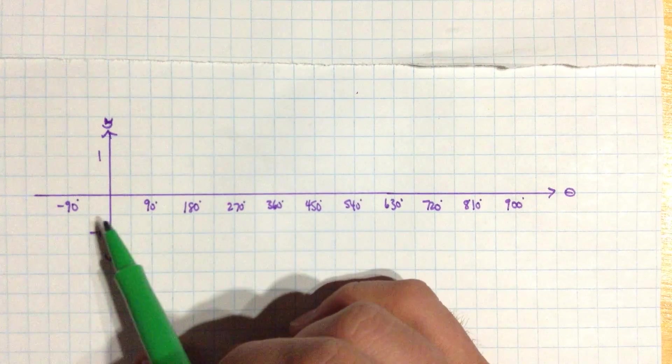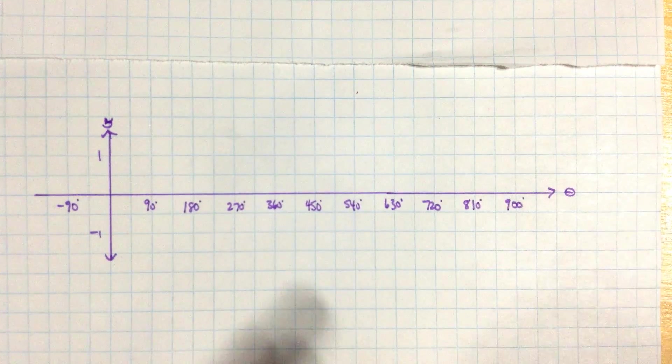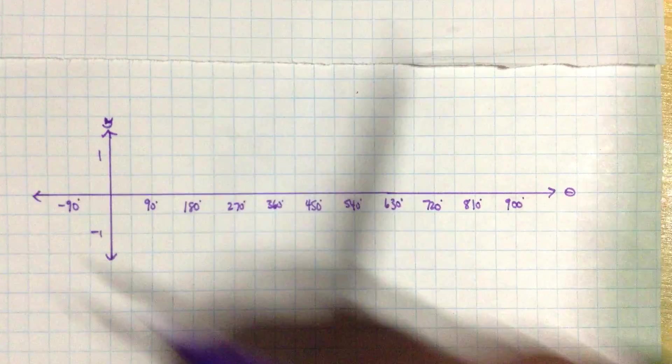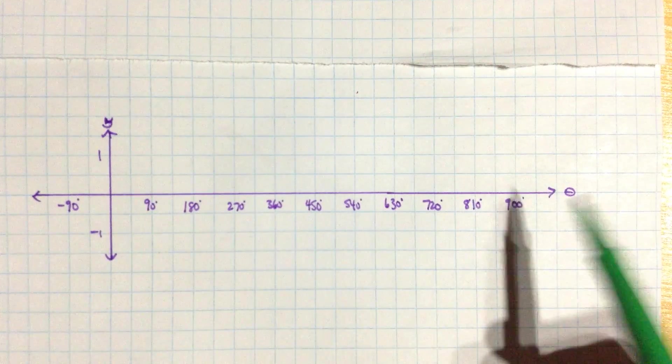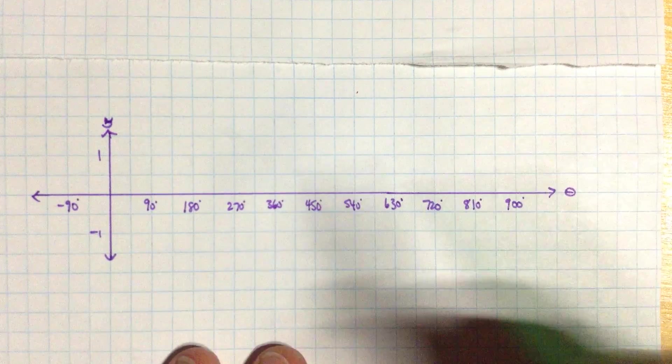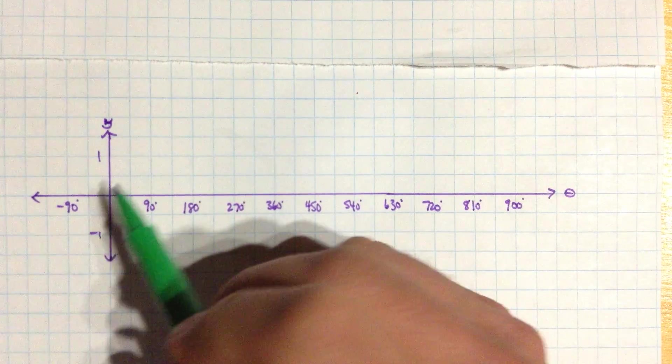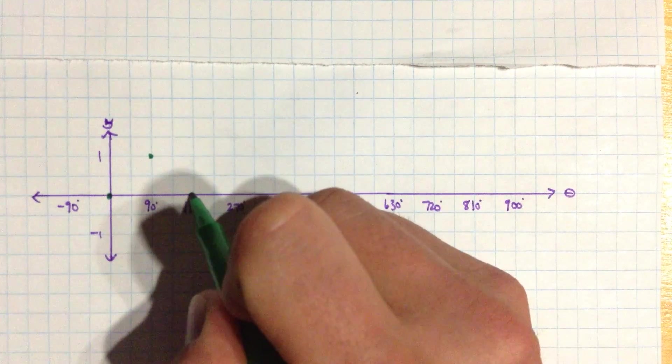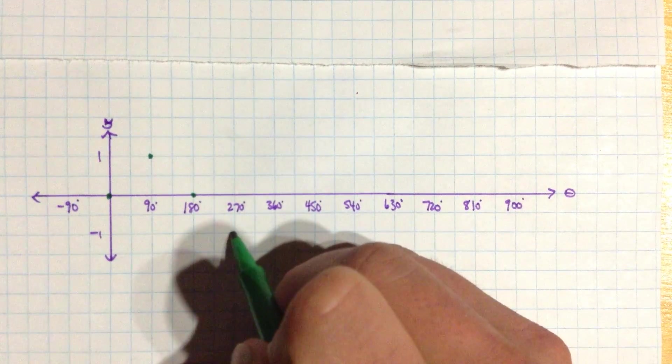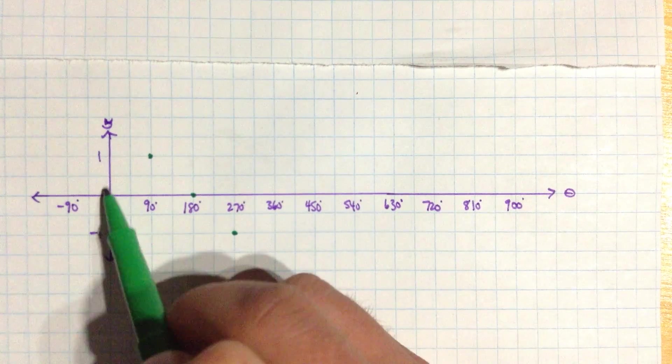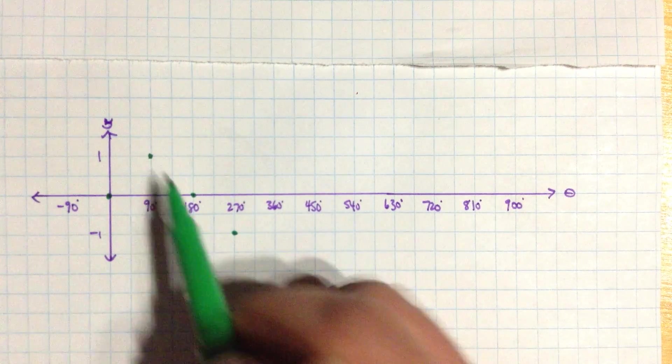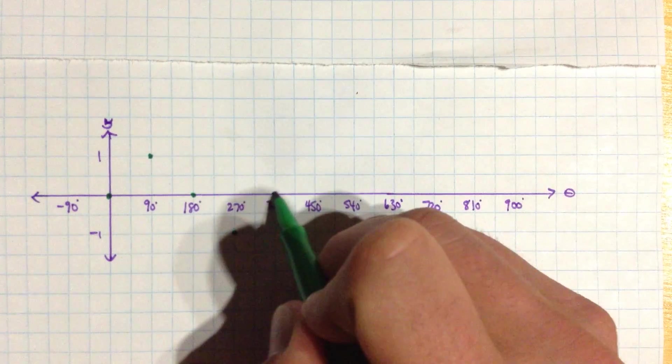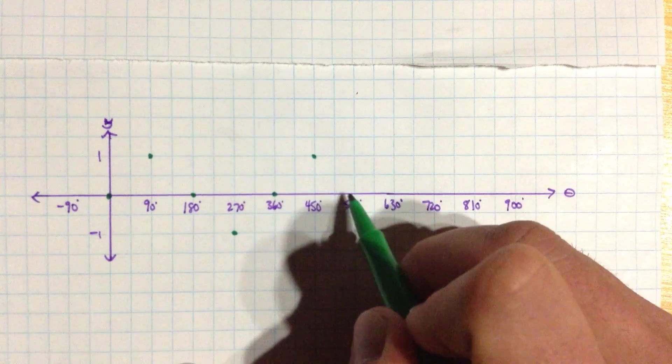So what I've done is I've drawn another little set of axes here. Again, y and theta. We're going to graph exactly the same function. But instead, this time, I'm just going to use sort of my significant points. I know 0, 90 is up here, 180, and 270. And each box here is half of a unit. So there's 1 unit. And I'm just going to continue on and put in these important points.